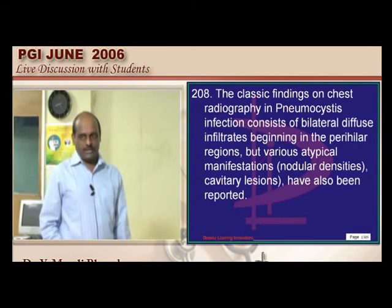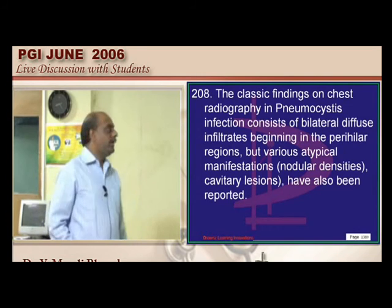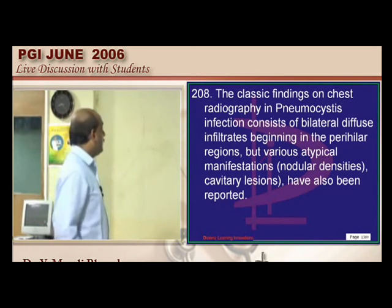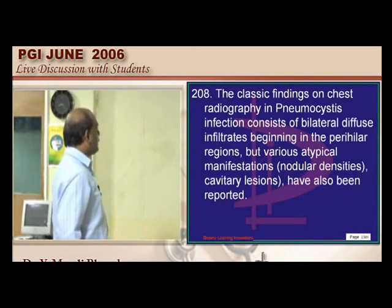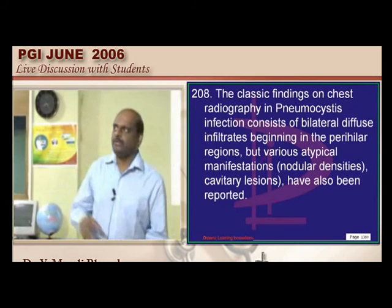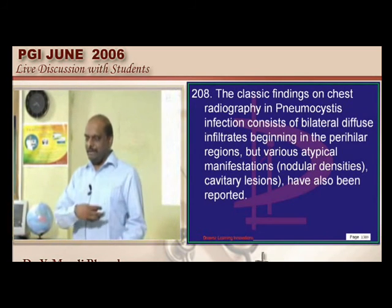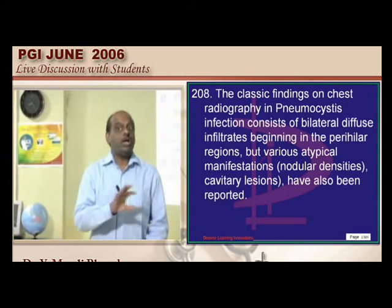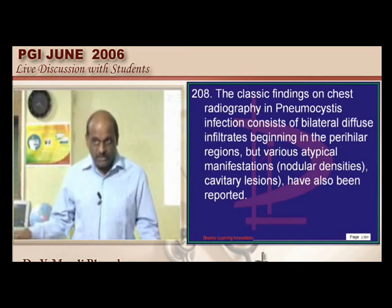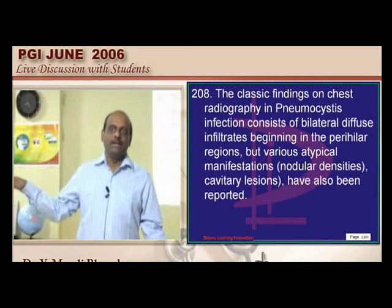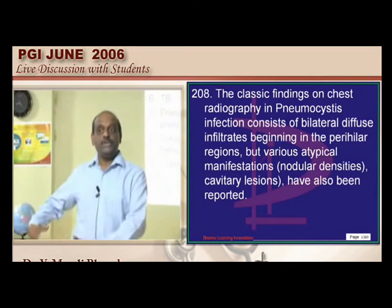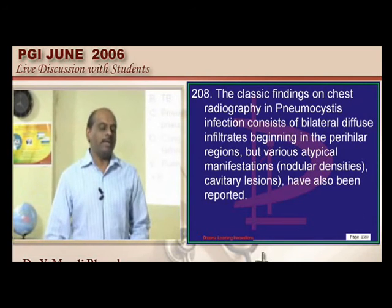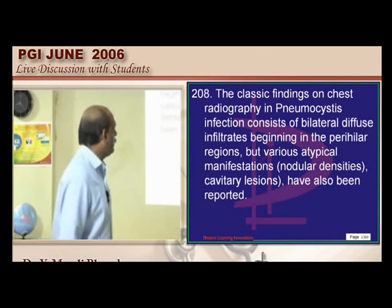Miliary mottling is seen in tuberculosis, rheumatoid arthritis, and disseminated fungal infections. Pneumocystis leads to an interstitial diffuse alveolar pattern type of shadowing — this distinction needs to be remembered.